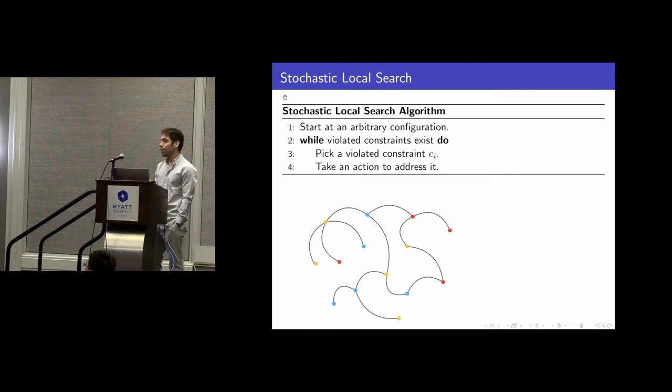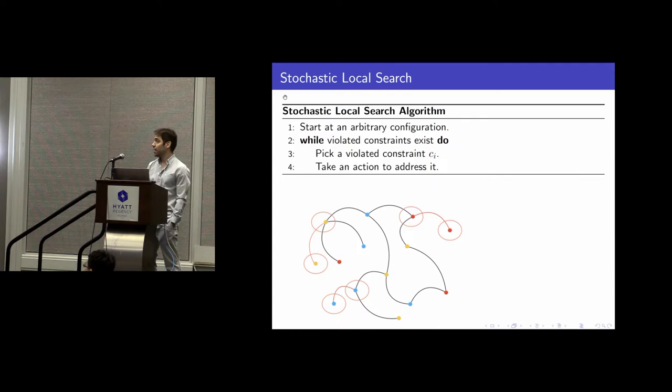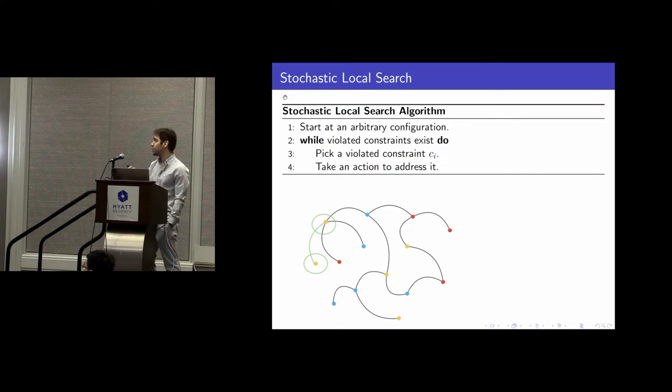So what is this? It's an algorithm that, for example in the case of Q-coloring, starts at an arbitrary configuration, and then while violated constraints exist, it focuses on one constraint and takes a random action in an effort to fix it. For example, it could choose a new random variable and new random values for the variables of the constraint.